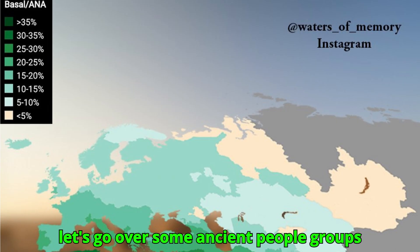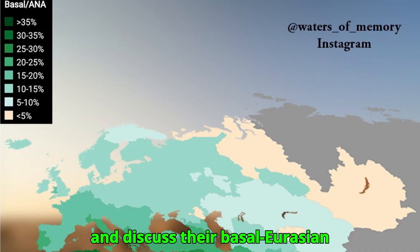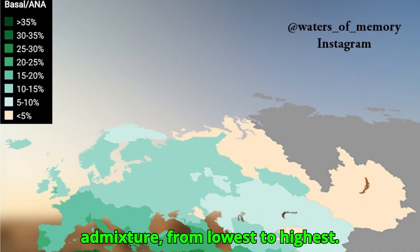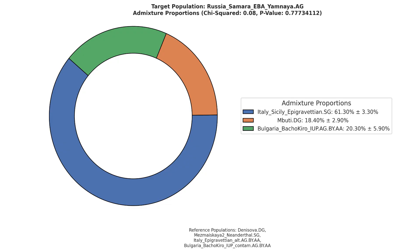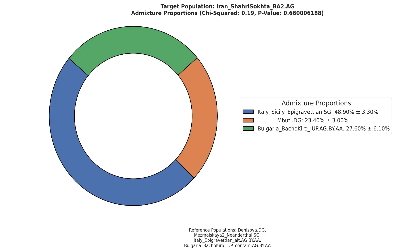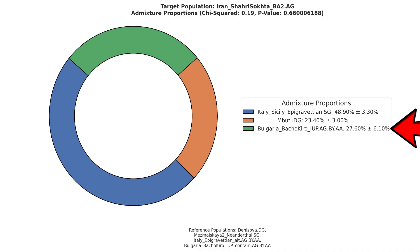Now let's go over some ancient people groups and discuss their Basal Eurasian admixture, from lowest to highest. The population with the lowest Basal Eurasian ancestry is Yamnaya, with a total of 18.4% Basal Eurasian admixture; on top of that they also have around 20% East Eurasian admixture. Next, the Indus Valley Civilization carries around 23.4% Basal Eurasian admixture, plus around 27.6% East Eurasian admixture.